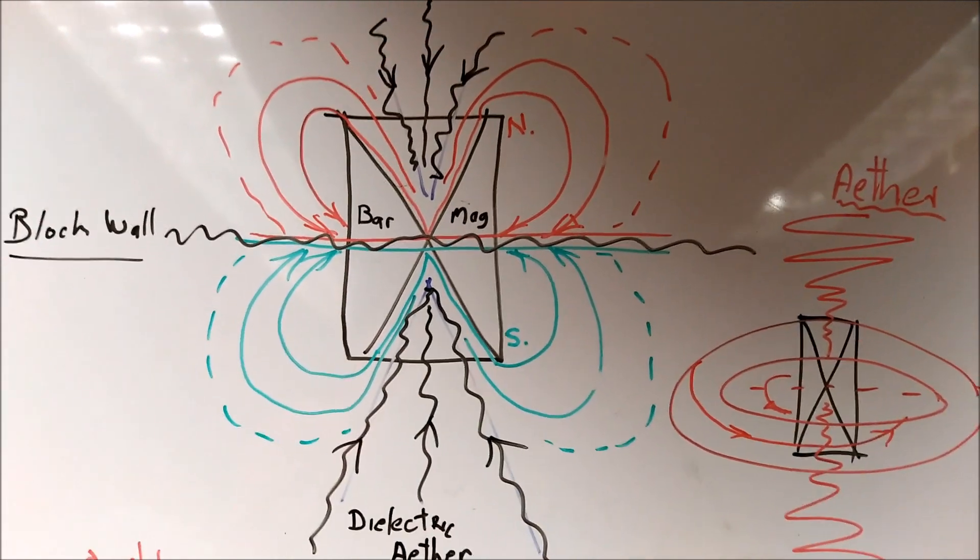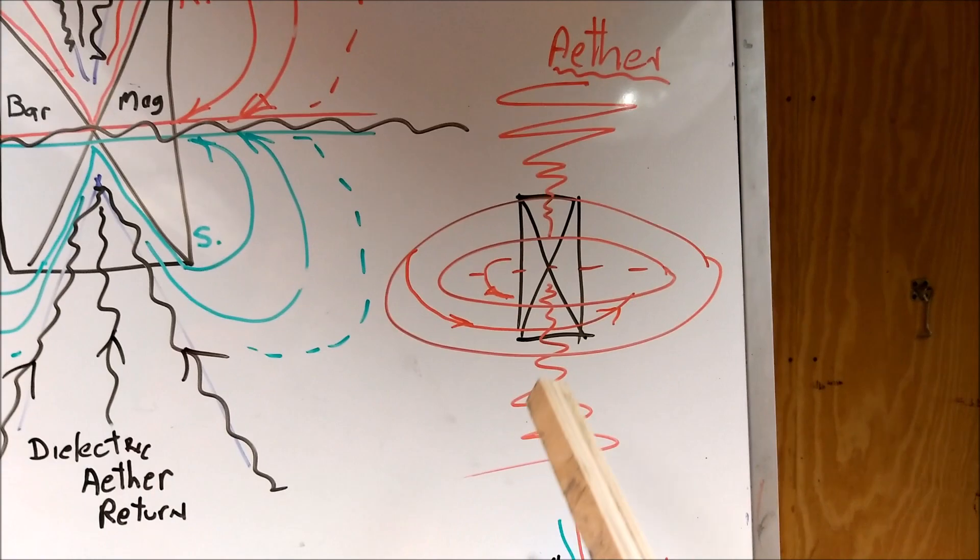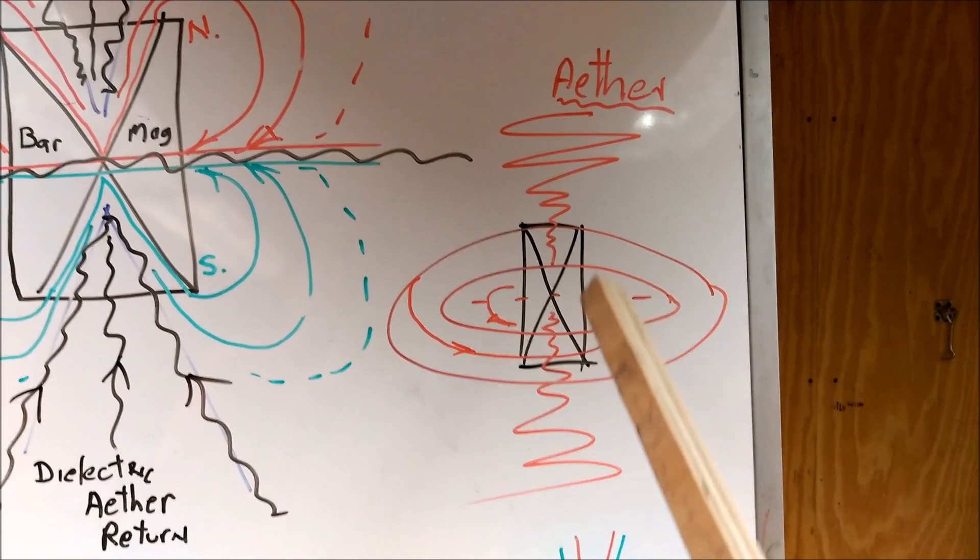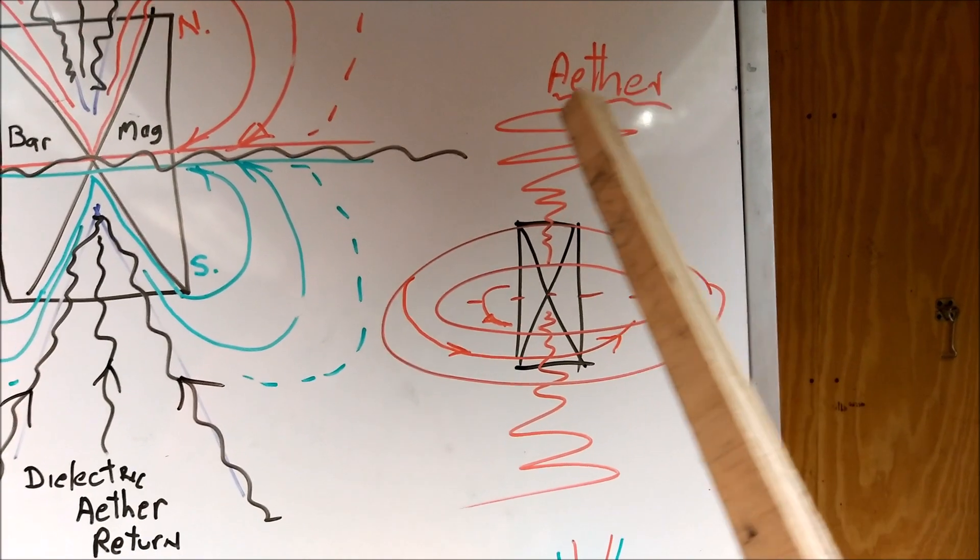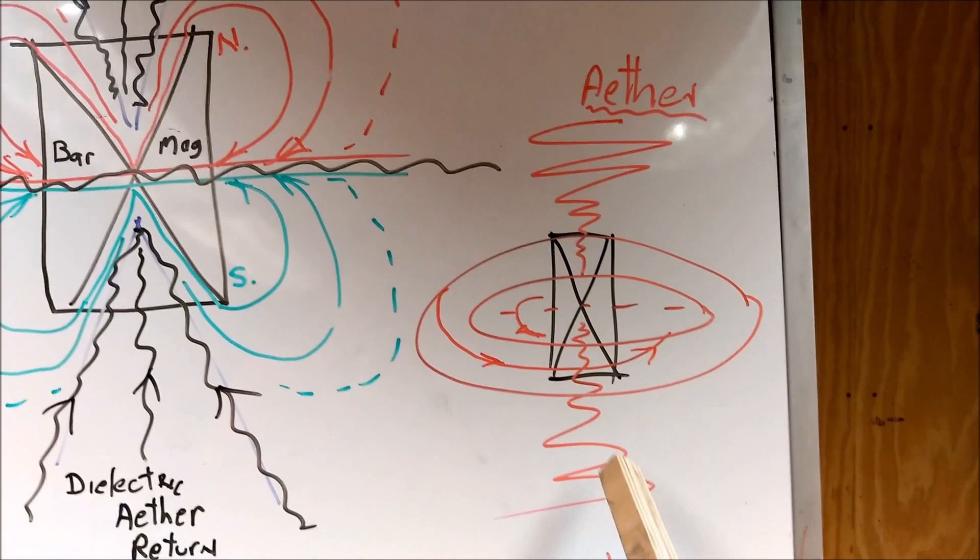My take on things now is, if this is the bar magnet again, we've got the ether which is the dielectric coming in at the North Pole and also coming in at the South Pole.